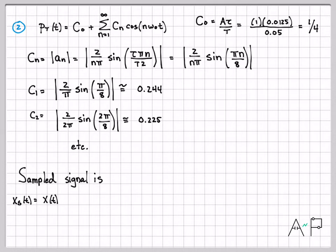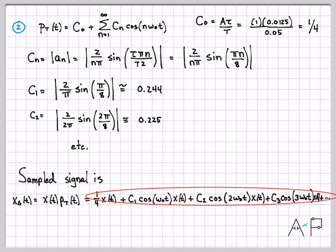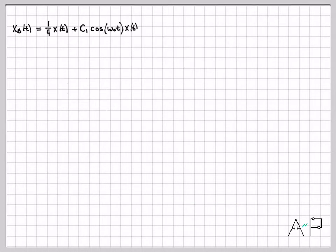So now we know what our sampled signal is. Since we know what Pt of T is, we know what x of T is, we can compute the sampled signal xs of T. We simply multiply our original continuous time signal times Pt of T. And if we do that using this Fourier series representation for Pt of T, we know what's going to happen. I'm going to have C0 x of T plus C1 cosine of 1 times omega naught times x of T, just that first harmonic, plus C2 times 2 times the fundamental times x of T, plus C3 cosine 3, et cetera. All right, so this is our sampled signal in the time domain. Let's go ahead and analyze that just a little bit. Just to make things simple, I'll rewrite that expression of our sampled signal in the time domain.